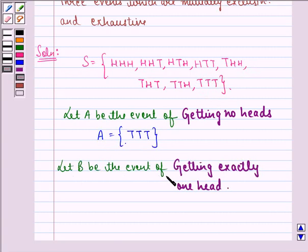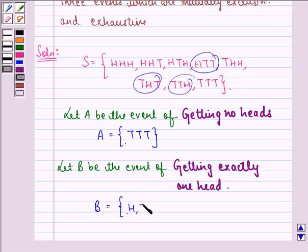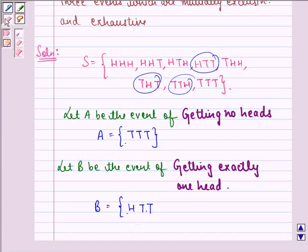Let B be the event of getting exactly 1 head. So sample space for the event B will be all the elements where we have just 1 head. That will be this and this and this. That will be HTT, THT and TTH.